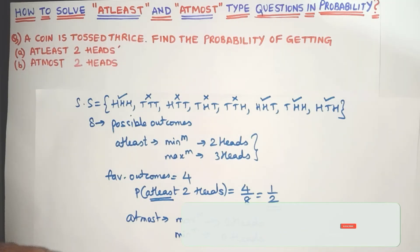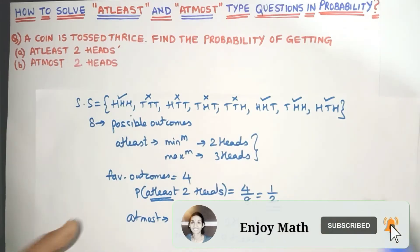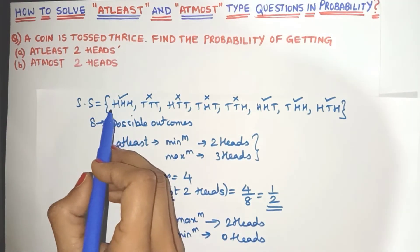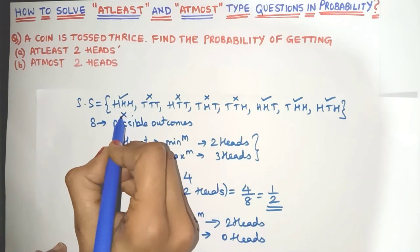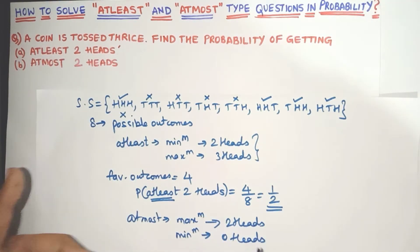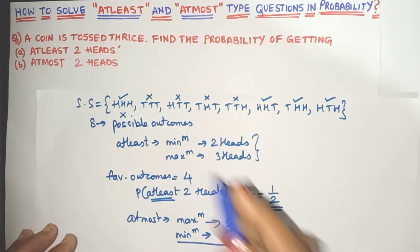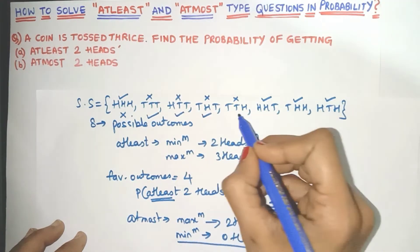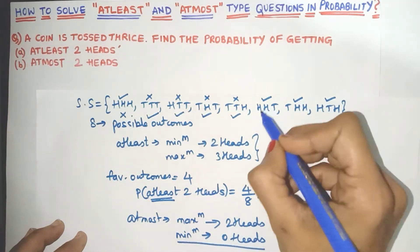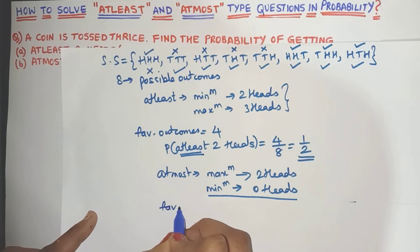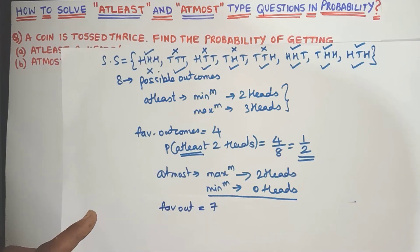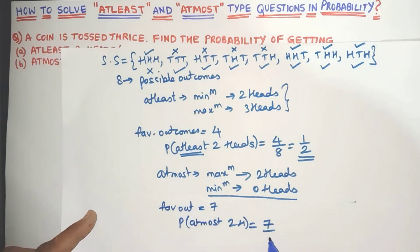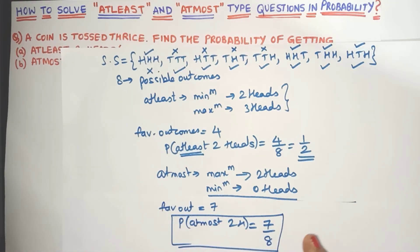Let's see which outcomes satisfy this condition. Here we have three heads — we need maximum only two heads, so this will not qualify. Here there are no heads at all, but that's fine because minimum zero heads is okay, so this is correct. Here one head — one head is also fine. Two heads is also fine. So the favorable outcomes are seven. The probability of getting at most two heads is 7/8. Nothing can be cancelled, so the probability of getting at most two heads is 7/8.